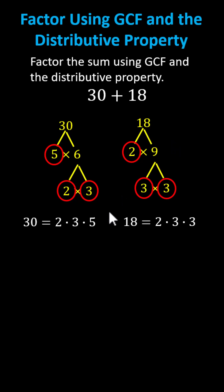Now to identify the greatest common factor, we circle the prime factors that 30 and 18 have in common. Notice they both contain one factor of two in common and one factor of three in common. This indicates the greatest common factor of 30 and 18 is two times three, which is six.